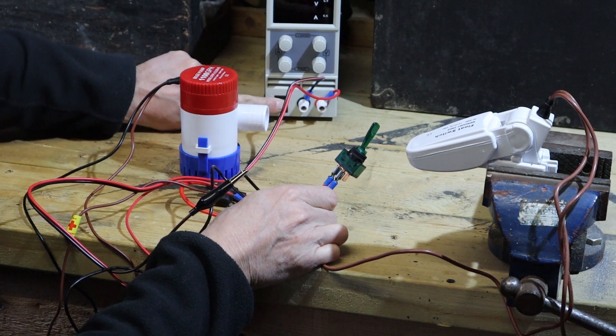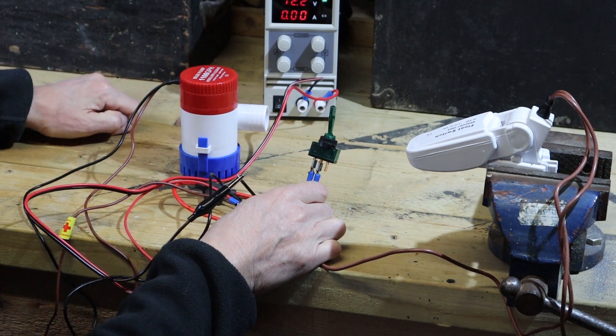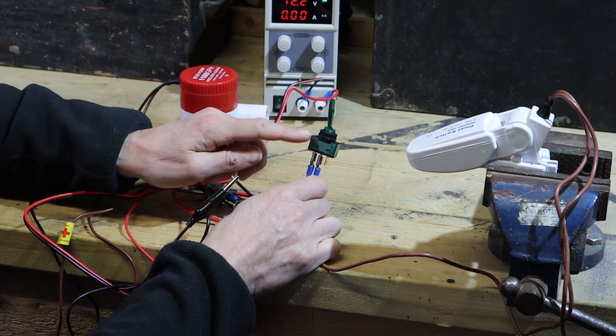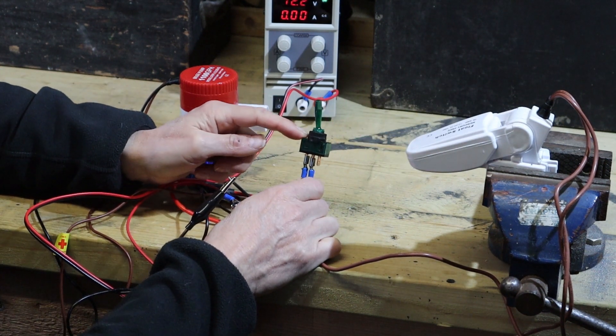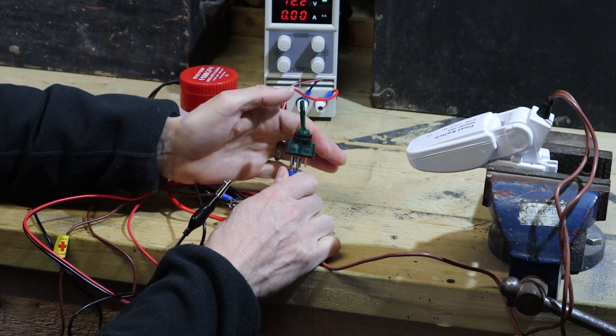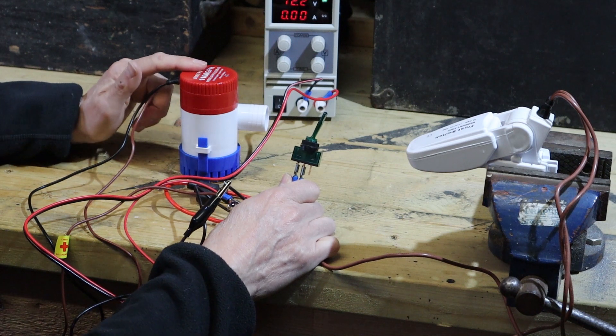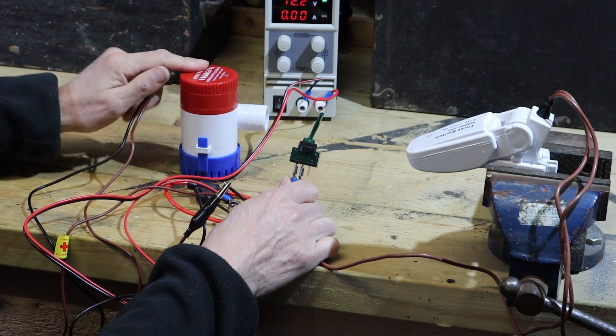Now we can put the electrics on. For the moment the float switch isn't going to do anything because our toggle switch, which would be on the inside of the boat, is off. We put that on. What it means is the bilge pump is sitting there ready, waiting to pump when the water level rises.